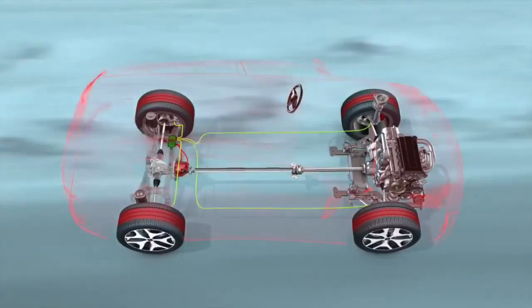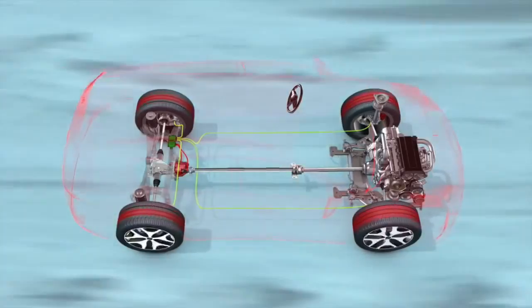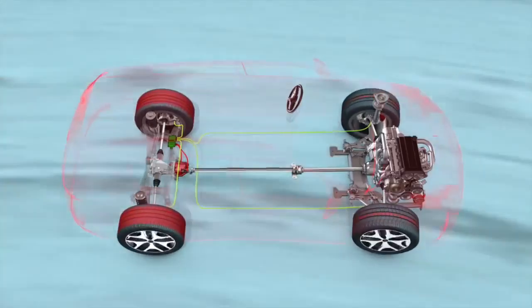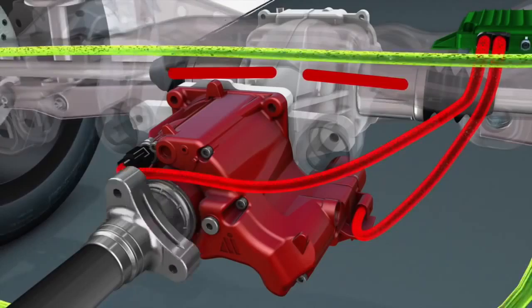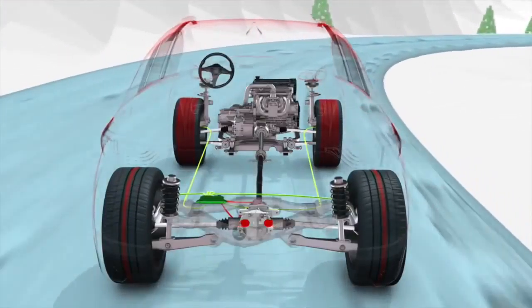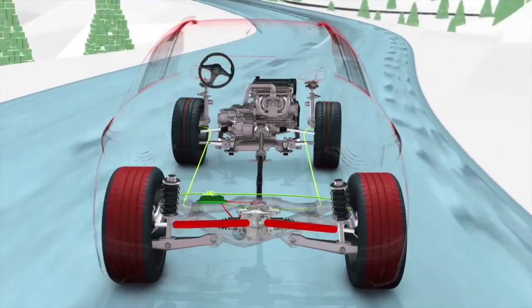The result is maximum performance at the highest level of safety on every surface and in any driving situation. By continually optimizing the distribution of torque through the driveline, the lateral stability of the vehicle is improved, even when cornering too quickly.